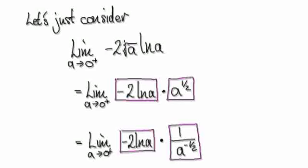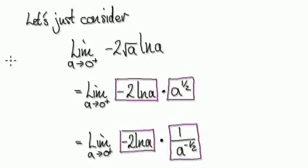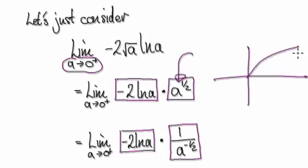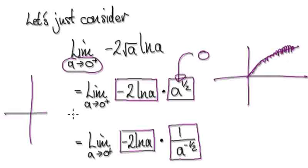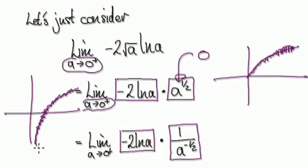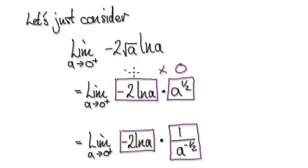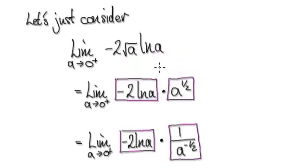Rewrite this as one block multiplying another block. As `a` tends to zero, the square root of `a` heads towards zero — so this factor is heading towards zero. Looking at the natural log graph, as `a` tends to zero the natural log heads towards negative infinity. So here you've got zero times negative infinity, which with the negative sign makes it a positive infinity — an indeterminate form: infinity times zero.